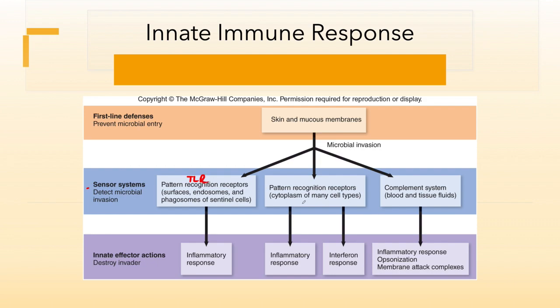We have others that are found in the cytoplasm. These are going to be known as NLRs and RLRs. And then finally, we have a chemical system called the complement system, which is found in blood and tissue fluid.